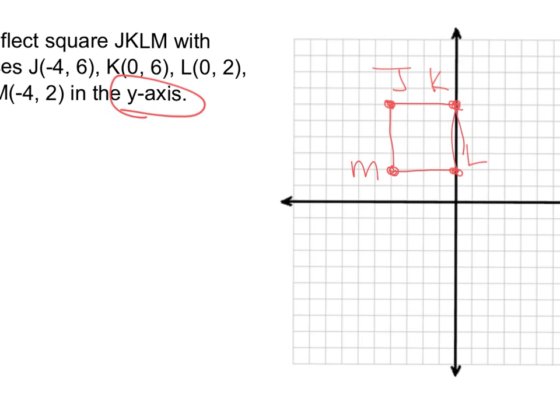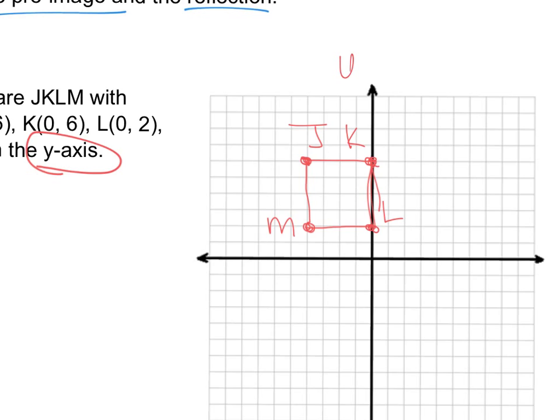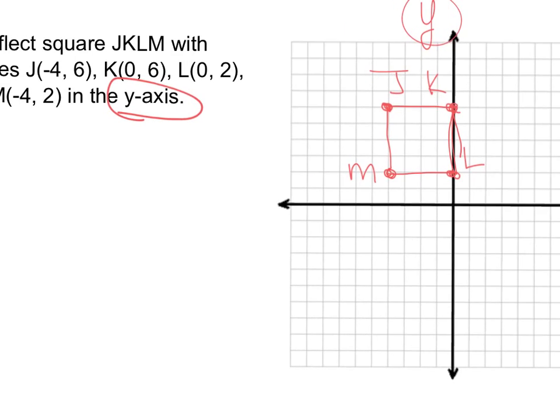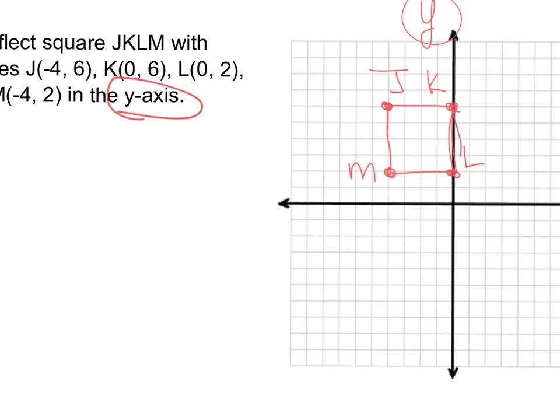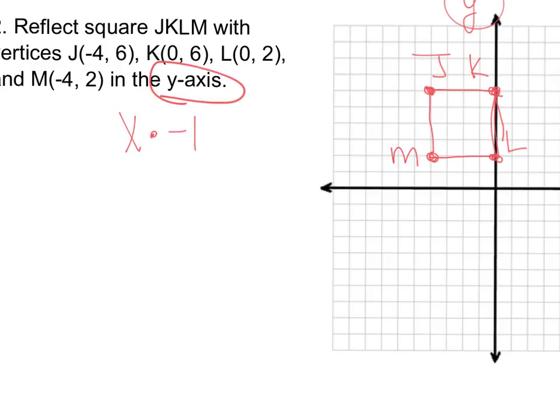Now I'm reflecting it over the y-axis, right there. So what I want to do with that is take the opposite. So I'm going to take the x value times negative 1. So if I've got negative 4, 6, I want to take the x times negative 1. So that's going to give me 4, 6.